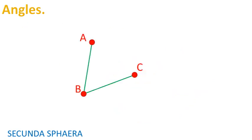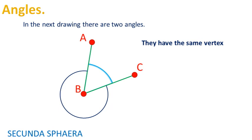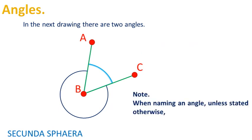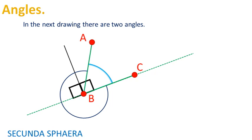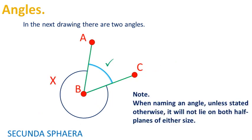There is only one ambiguity remaining when denoting angles. Even an angle ABC, always two angles are constructed, as the drawing shows. Unless stated otherwise, when an angle is named, it will be such that it does not lie on the two half planes of one of its sides. An equivalent idea is that when naming an angle, it will be such that it measures less or equal the sum of two right angles.